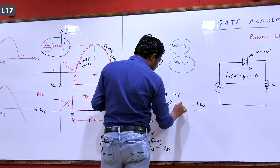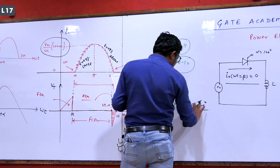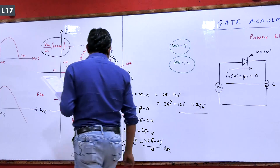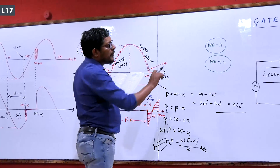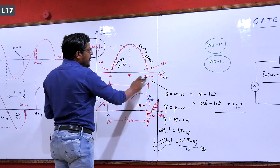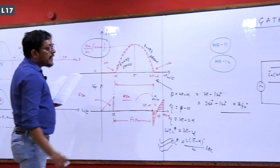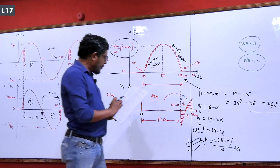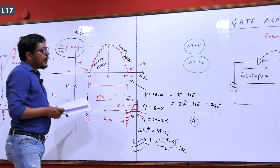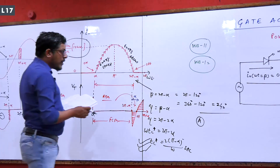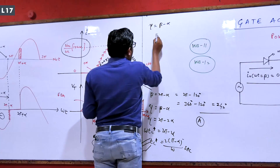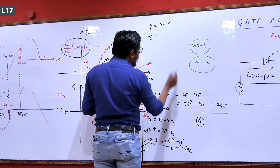So 360 minus 120 degrees equals 240 degrees. The extinction angle beta — the value at which the device will be off — is 240 degrees. At that point the current flow in the circuit is zero. The inductor stores energy from alpha to pi, and from pi to 2π minus alpha it releases energy, so the current becomes zero. Therefore the extinction angle is 240 degrees.